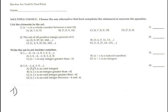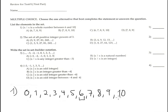Okay, first question is list the elements in the set. The condition is a whole number between 6 and 10. Whole numbers are 0, 1, 2, 3, 4, 5, 6, 7, 8, 9, and 10. So it's in between 6 and 10.